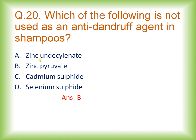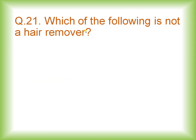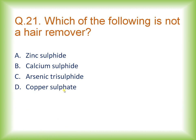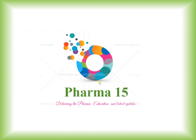The remaining agents — zinc undecylenate, cadmium sulfate, and selenium sulfate — are anti-dandruff agents used in shampoos. Question twenty-one: which of the following is not a hair removal agent? Options are zinc sulfite, calcium sulfite, arsenic trisulfite, and copper sulfate. The right answer is option D: copper sulfate is not used as a hair removal agent. The sulfite category — zinc sulfite, calcium sulfite, and arsenic trisulfite — are used as hair removal agents.